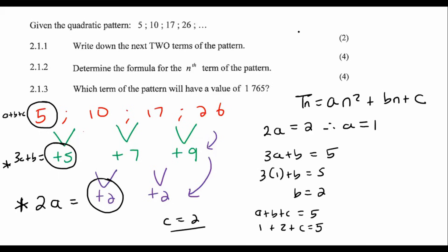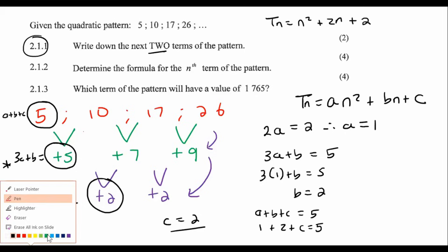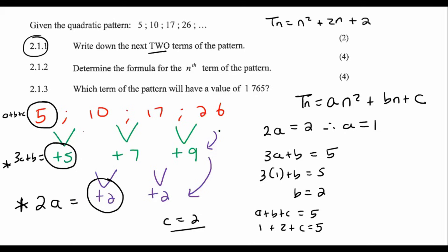A is 1, so now we can say that T_N is equal to N squared plus 2N plus 2. I didn't even answer question 2.1.1 — I do apologize for that. They wanted us to write down the next two terms, and I was already doing the next question.